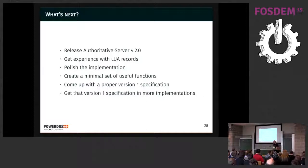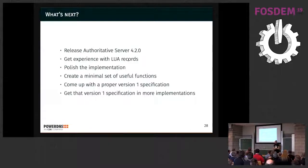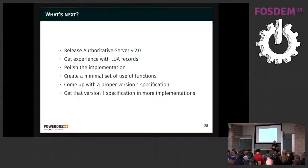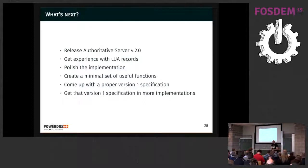What's next: we're going to release authoritative server 4.2.0 somewhere soon — alpha 1 is out now, we expect release in about a month. We want to get some operational experience with LUA records, see what works and what doesn't, and see if we can change the security model. Then we can polish the implementation, create a minimal set of useful things, specify a little bit of how LUA should work, come up with a proper specification for version 1 of LUA records, and hopefully put it to the IETF or at least other implementers for interoperable dynamic record generation.